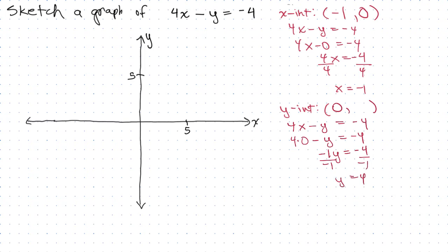Remember, we're writing the ordered pair here. When x is 0, y is 4. Right. So we go over here and graph each of them. The x-intercept is on the x-axis, and that's (-1, 0), which is right here.